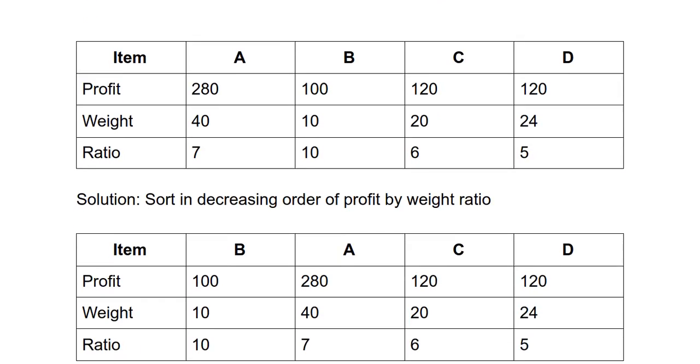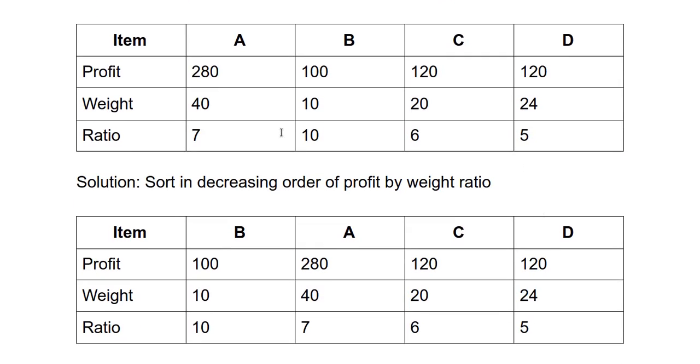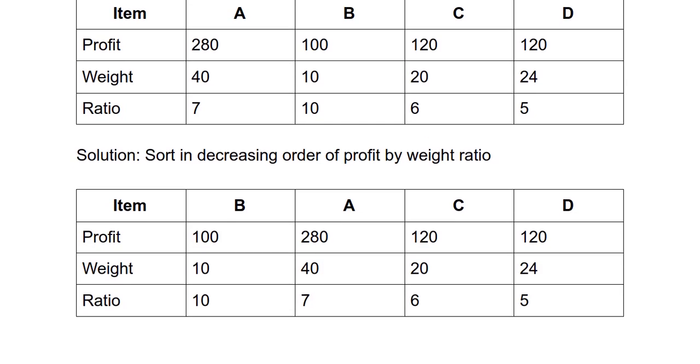So here I have calculated the profit by weight ratio of each item for a, b, c, d, and then I have sorted them. So what I get is that b has the highest ratio followed by a, c, and d.